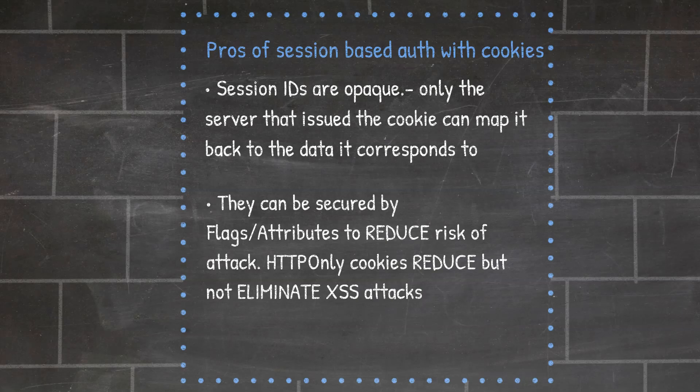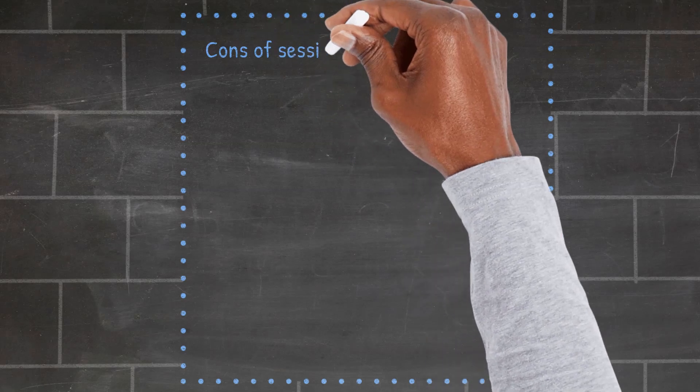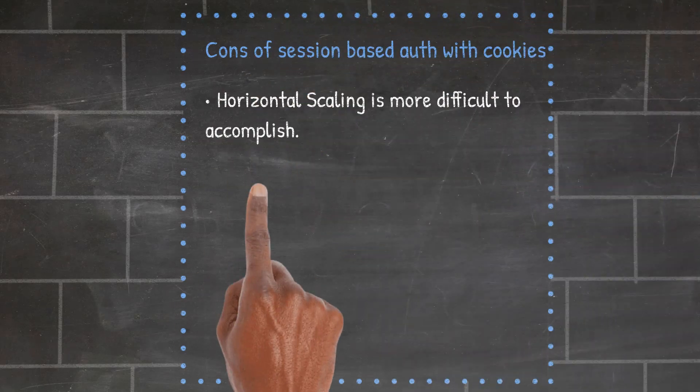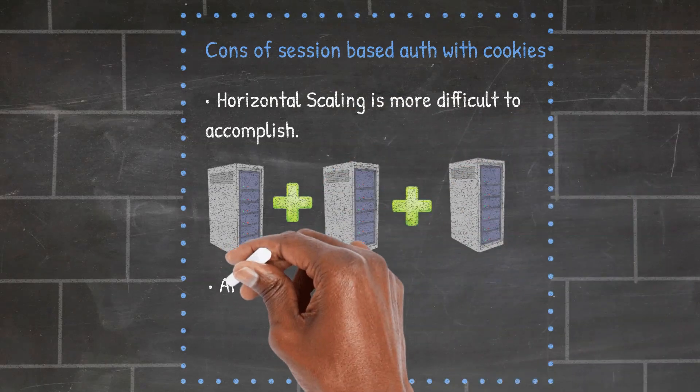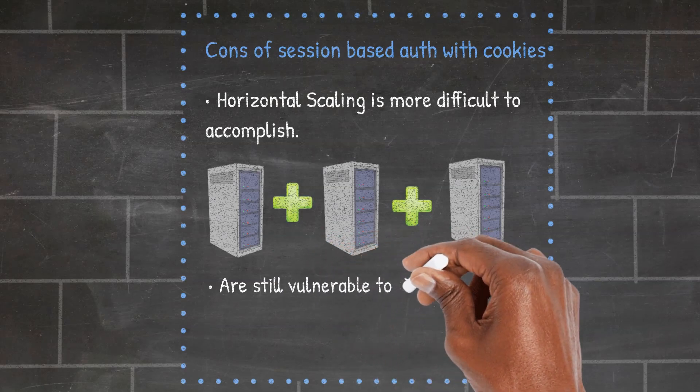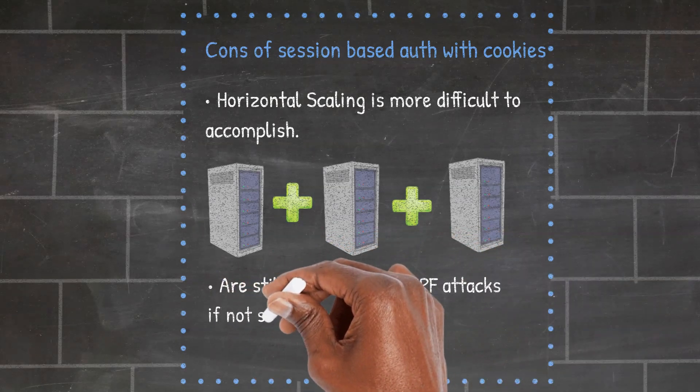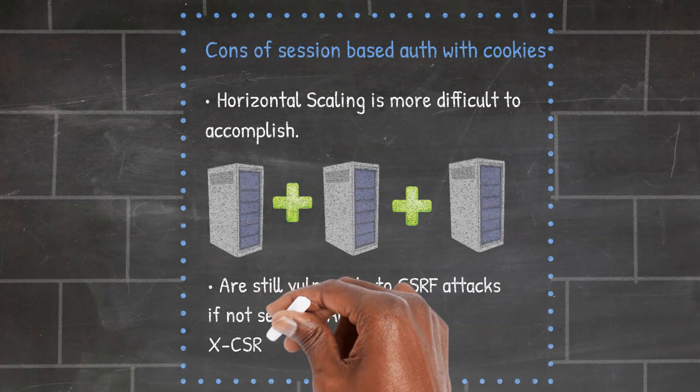The HTTP only flag ensures that the cookie is not accessible by client-side JavaScript. However, if the attacker manages to inject a malicious script in your front-end, then they can use that script to make HTTP requests to your server directly from the victim's browser and the HTTP only cookie, which contains the user's valid session ID, will be attached to every request. So the server will respond to the request without suspecting anything. Cons: Horizontal scaling is more difficult to accomplish as the server stores and tracks each user's session in memory. Horizontal scaling here means scaling by adding more machines to your pool of resources. They are also still vulnerable to CSRF attacks if not secured. It can be secured by, for example, adding a separate X-CSRF token cookie alongside the session cookie.